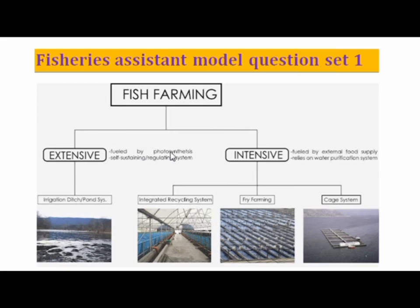In intensive culture, we use a rectangular or square-shaped pond. We stock more fish and prefer monoculture, though polyculture is also practiced. We use intensive farming technologies. With high stocking density, we can achieve a great yield. Both intensive and super-intensive systems aim for high yield.